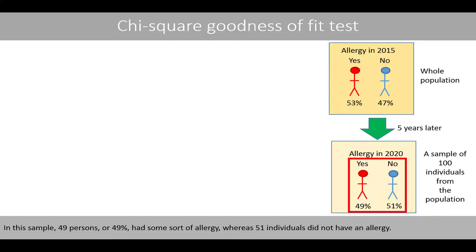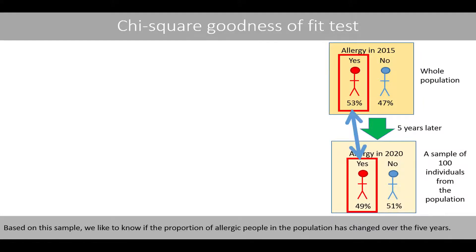In this sample, 49 persons, or 49%, had some sort of allergy, whereas 51 individuals did not have an allergy. Based on this sample, we'd like to know if the proportion of allergic people in the population has changed over the five years.